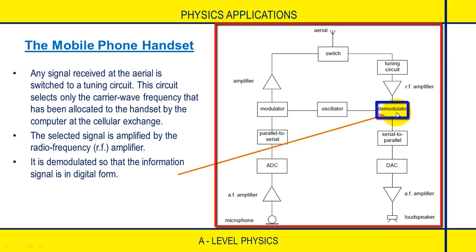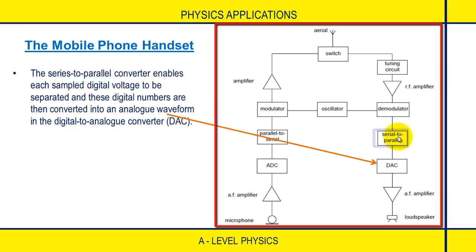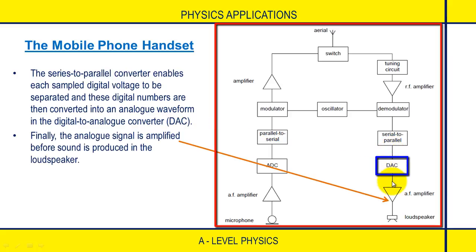At the demodulator, the information signal is separated from the carrier frequency — this is demodulation — leaving the information signal in digital form. At the next stage, the series to parallel converter separates each sampled digital voltage, and these digital numbers are then converted into an analog waveform by the digital to analog converter, or DAC. Finally, the analog signal is amplified before it is fed to the loudspeaker.